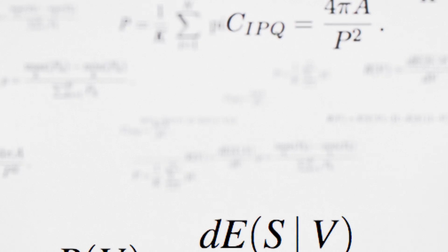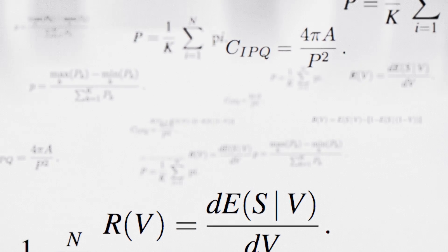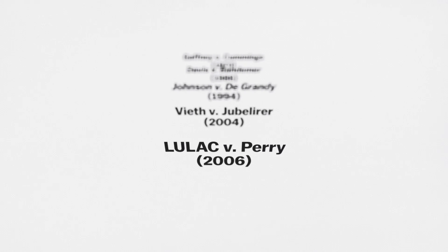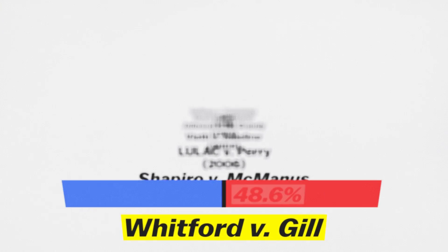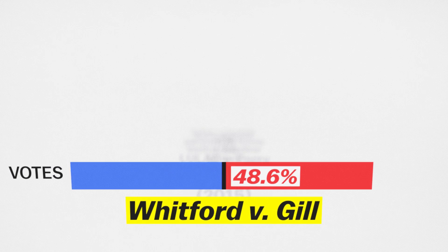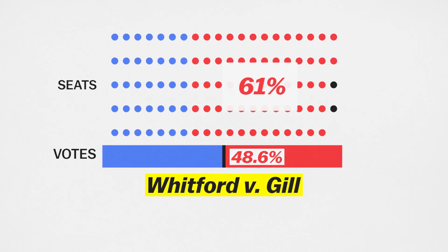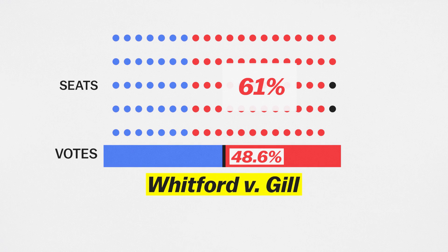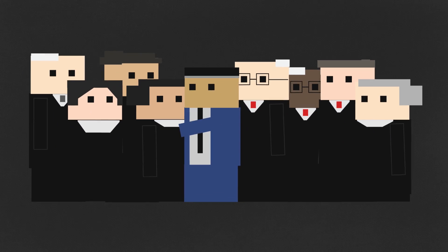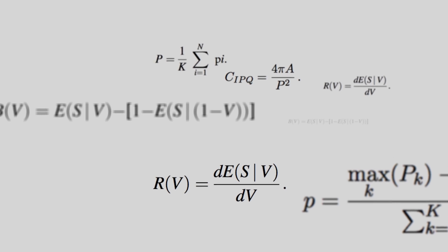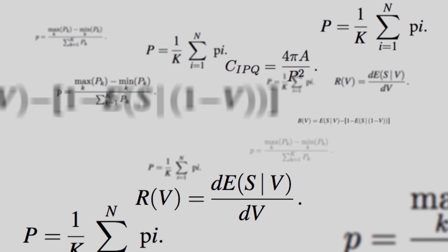Right now, there's no guarantee that this particular algorithm will ever be used as evidence in a court argument. But a handful of cases stand a real chance to make it to the court in the near future. One of them, Whitford v. Gill, deals with a Republican-drawn map for Wisconsin, where Republicans won 48.6% of the vote in 2012 but won 61% of the state assembly seats. Cho's project and others like it will make it harder for the justices to keep putting it off.